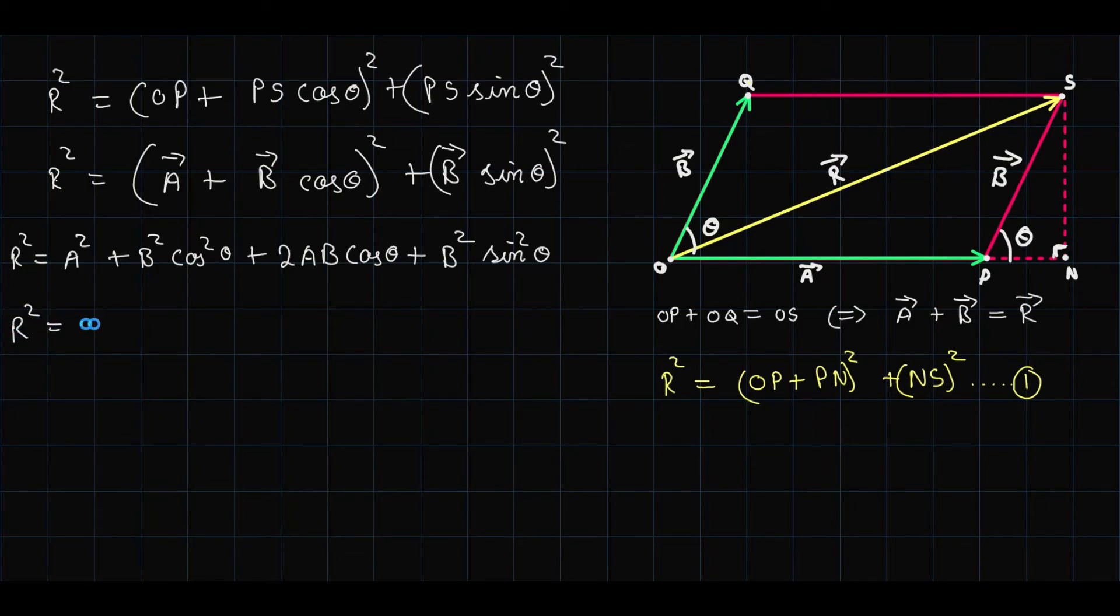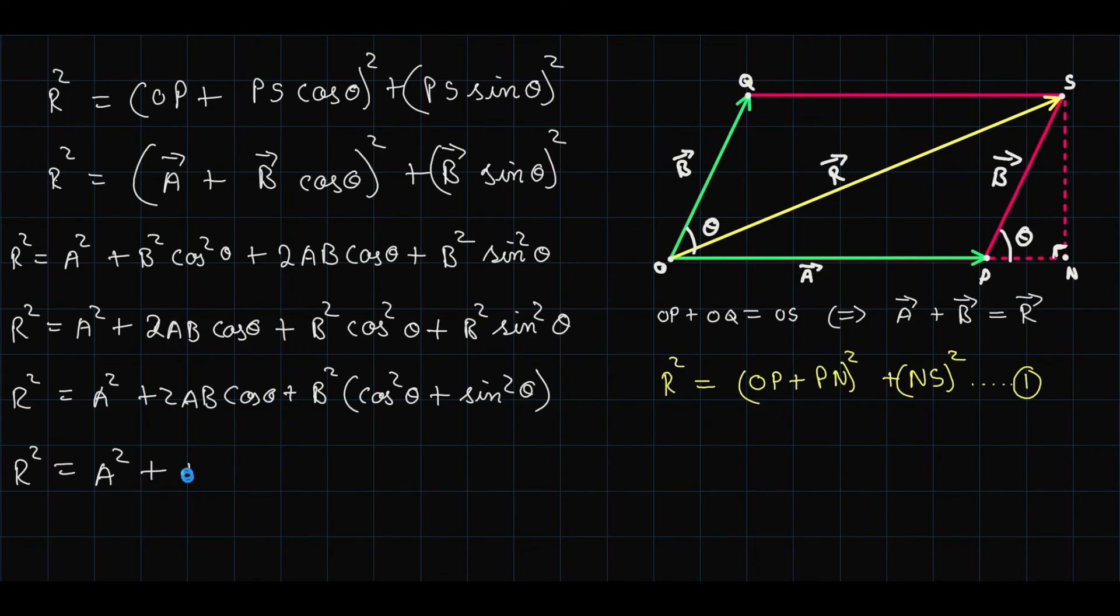Now on rearranging the terms, we can take B squared common from these two terms: cos squared theta and sine squared theta. Now this is a famous identity for which the value is 1. So R squared equals A squared plus B squared plus 2AB cos theta, which leads us to our final answer.